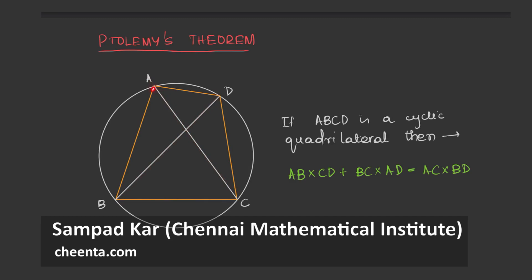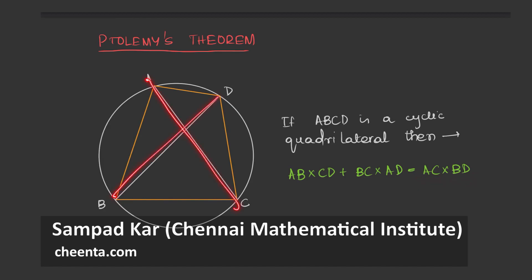This is a very important theorem relating the sides of the cyclic quadrilateral to its diagonals. Basically, if ABCD is a cyclic quadrilateral, then AB times CD plus BC times AD — the sum of the products of opposite sides — equals the product of the diagonals, which is AC times BD.